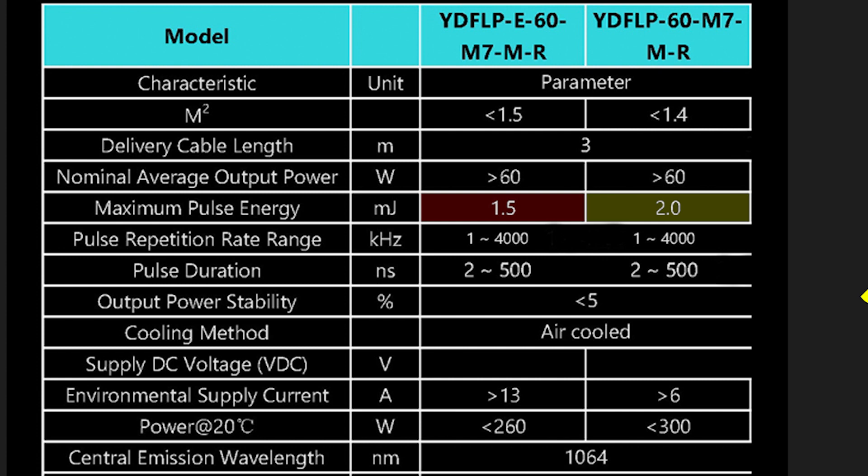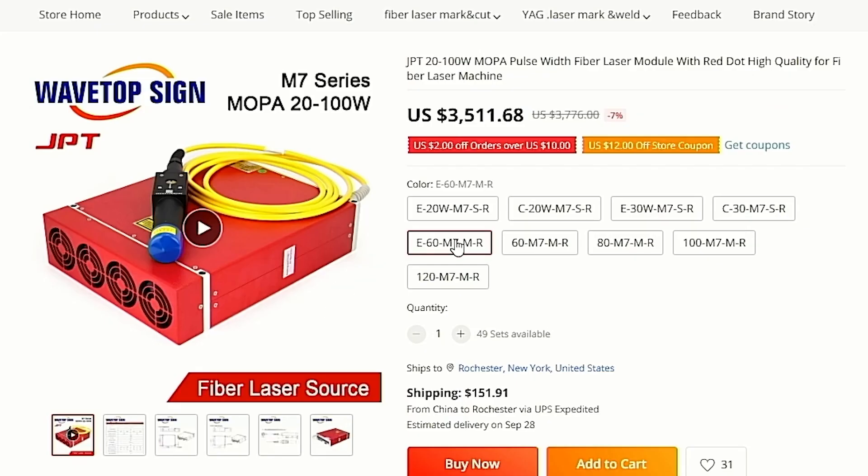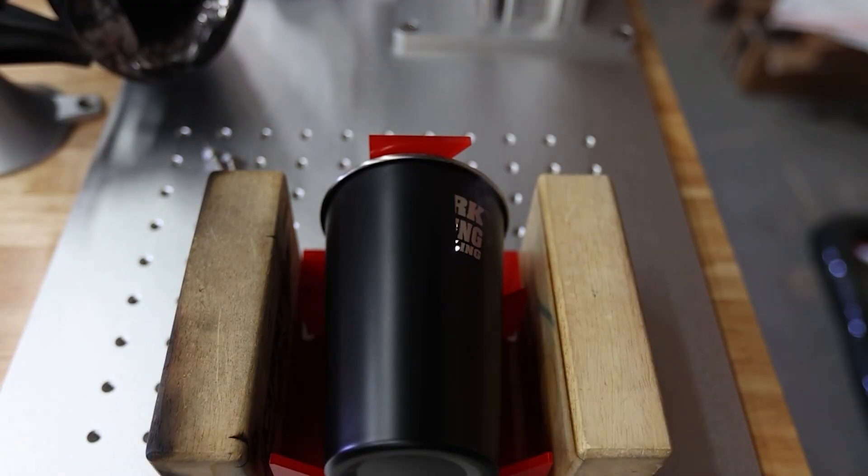Don't get me wrong, 1.5 mJ is great, and still higher than what I would consider industry average, but the 2 mJ pulse power that the full power model offers packs a serious punch. I bring this up because it's extremely common for vendors of the 60W M7 sources to include the budget model, as it keeps the overall price of the machine down. Not here. Again, the SFX is a business class machine, and that means you get the full power source with that sweet 2 mJ of pulse output power.